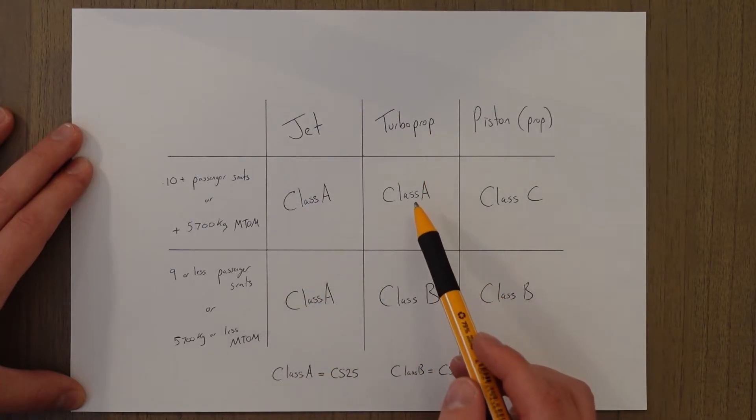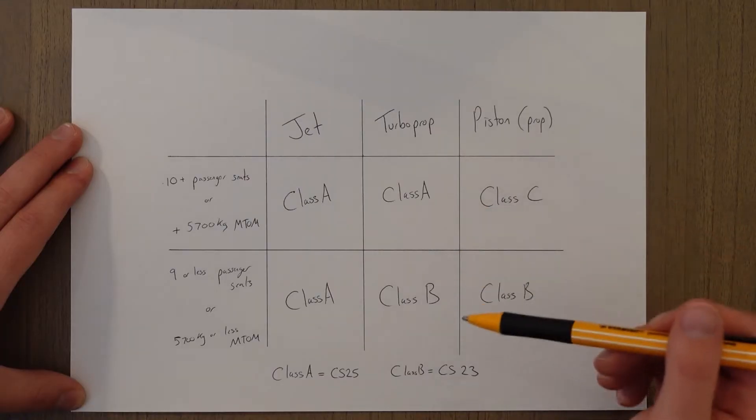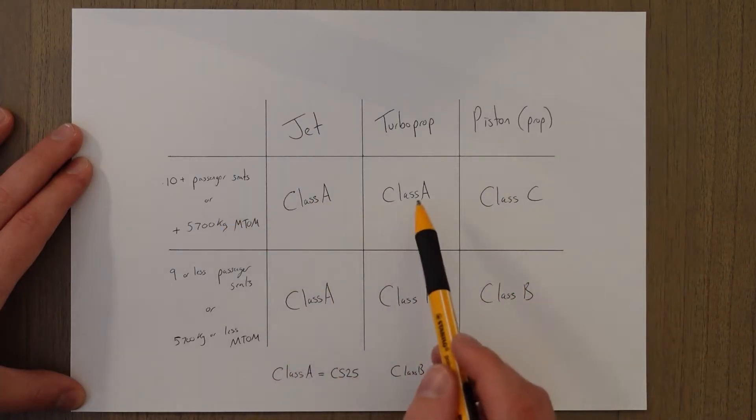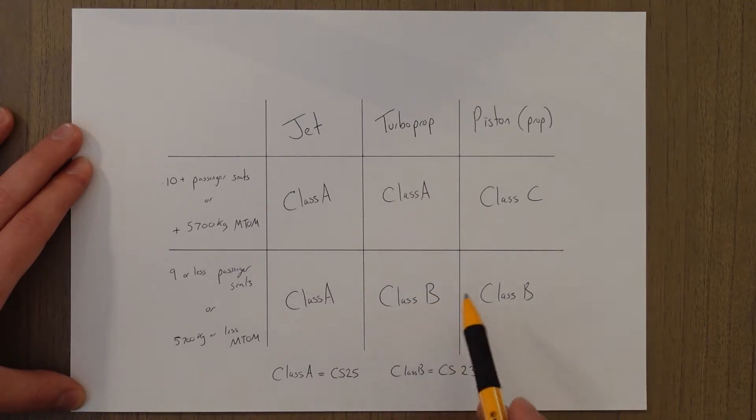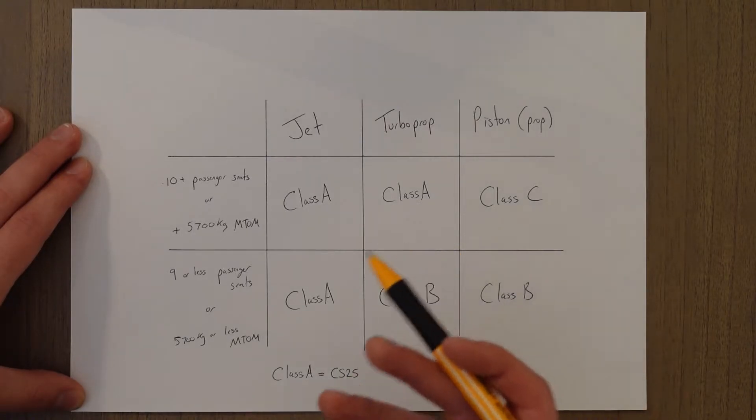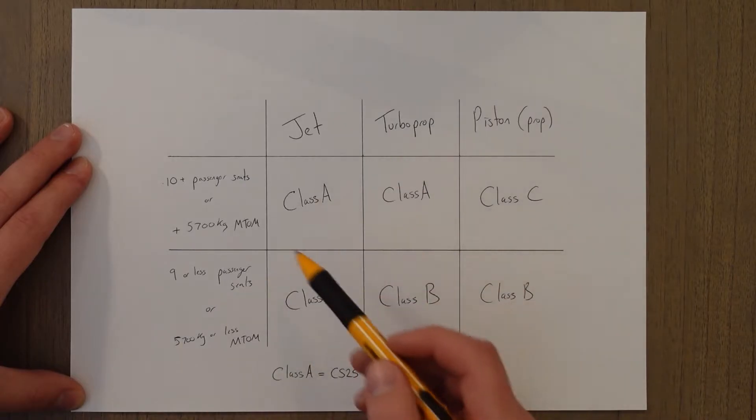For multi-engine turboprops, it depends on the size of it what class we need to fall into. So for big ones like a Dash 8, you would use Class A. But for smaller ones with nine or less passenger seats or weighing 5700 kilograms or less maximum takeoff mass, then we fall into Class B. Class B is set out in a similar document to Class A in CS23, and the performance standards are a bit more lenient, they're a bit more relaxed than they are for Class A.